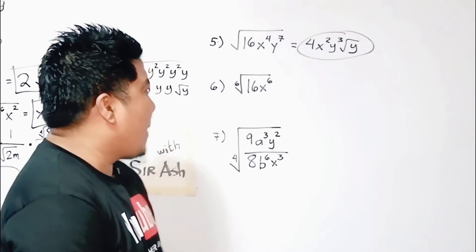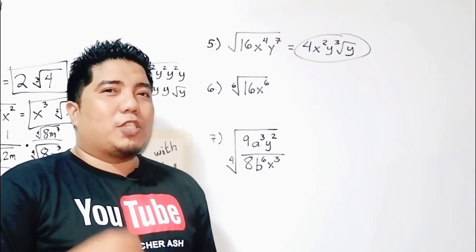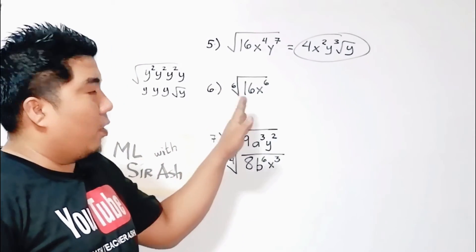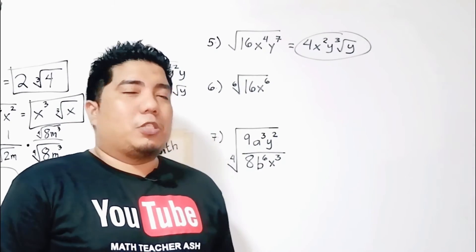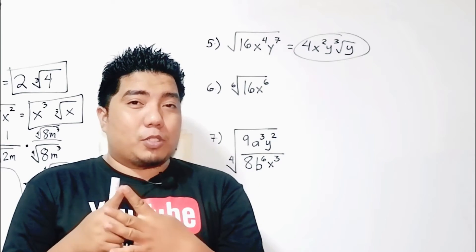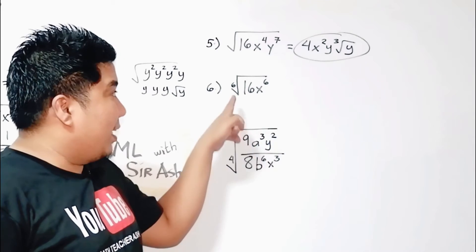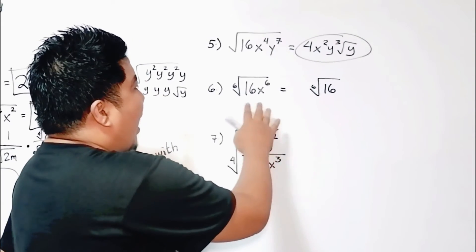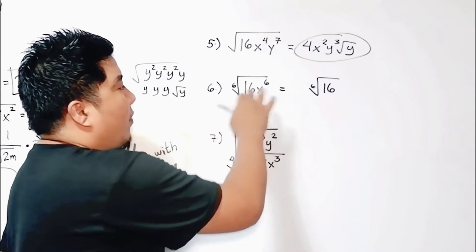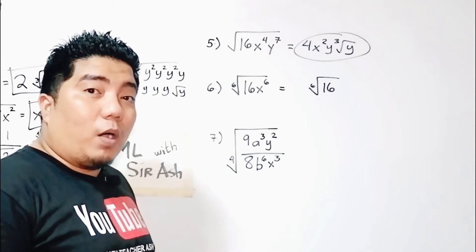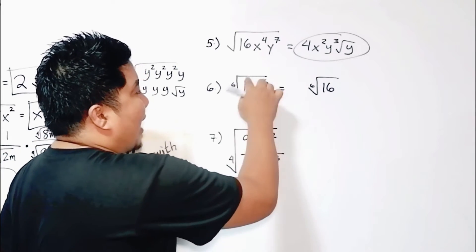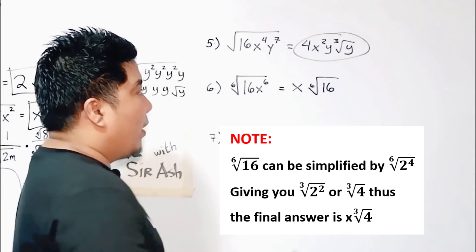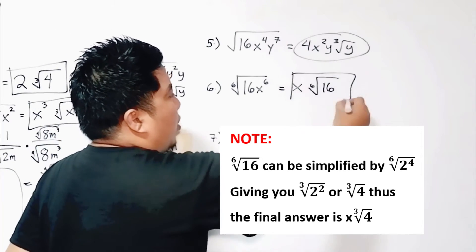For the sixth example, we have the sixth root of x⁶. For a number like 2: 2⁴ = 16, so it remains the sixth root of 16. For the variable, the sixth root of x⁶ applies the first law — we cancel the sixth in the index with the sixth in the exponent, giving just x. Final answer: x times the sixth root of 16.